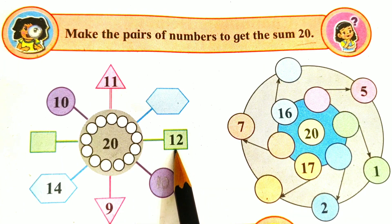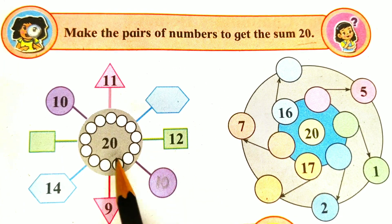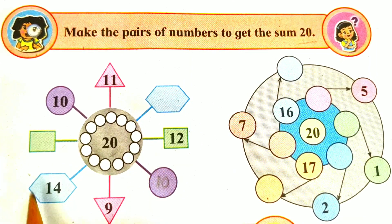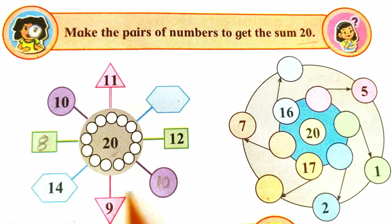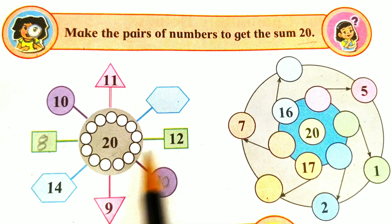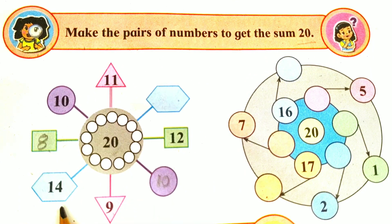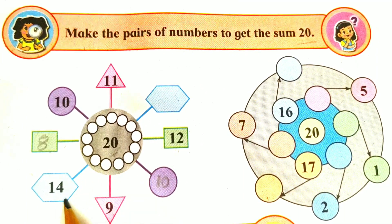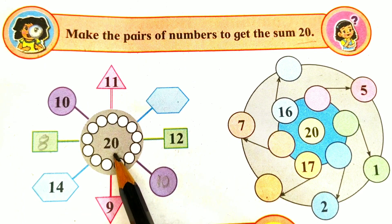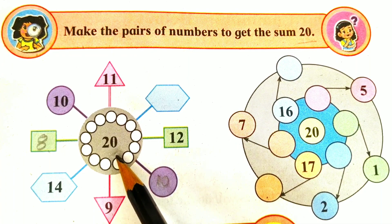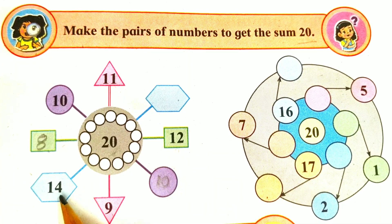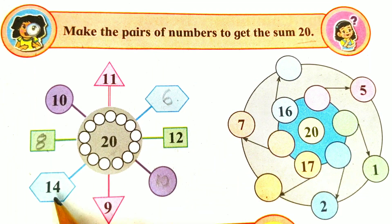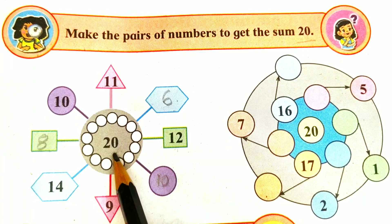Which number do we have to add to 12 so that we will get the sum 20? The answer is 8. If we add 8 to 12 we will get the sum 20. Now, 14 has been given — which number do we have to add to 14 so that we get the sum 20? If we add 6 to 14 we will get the number 20.